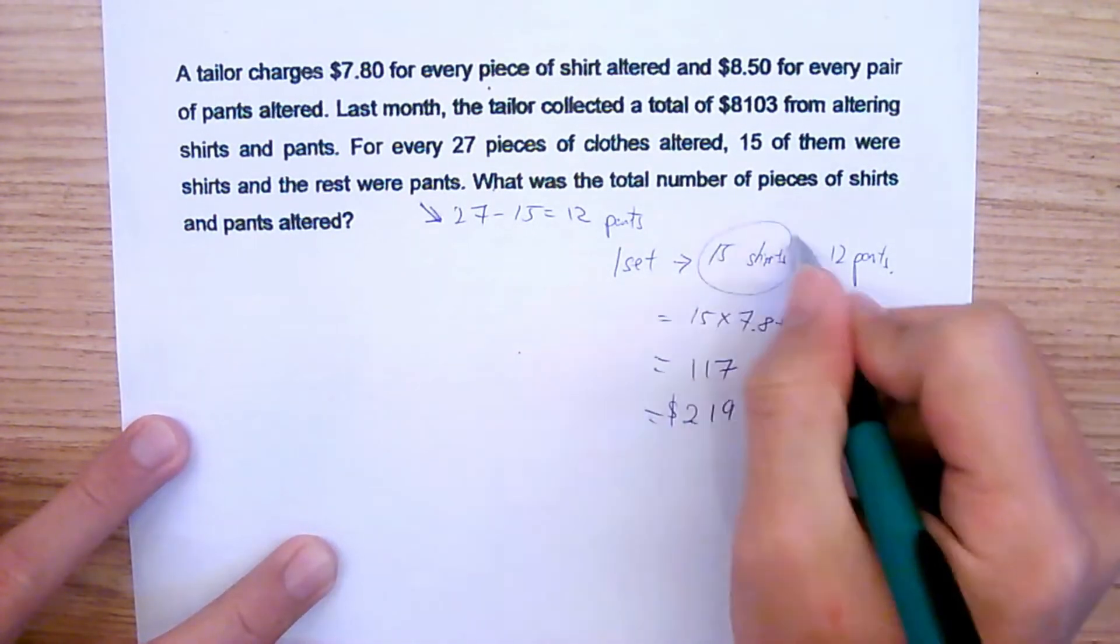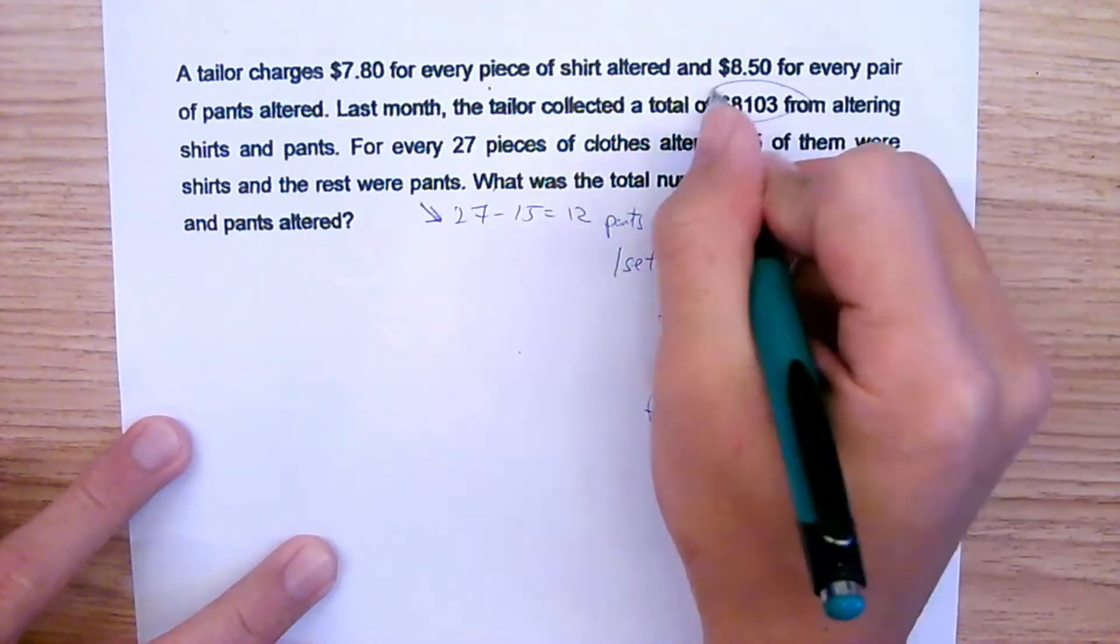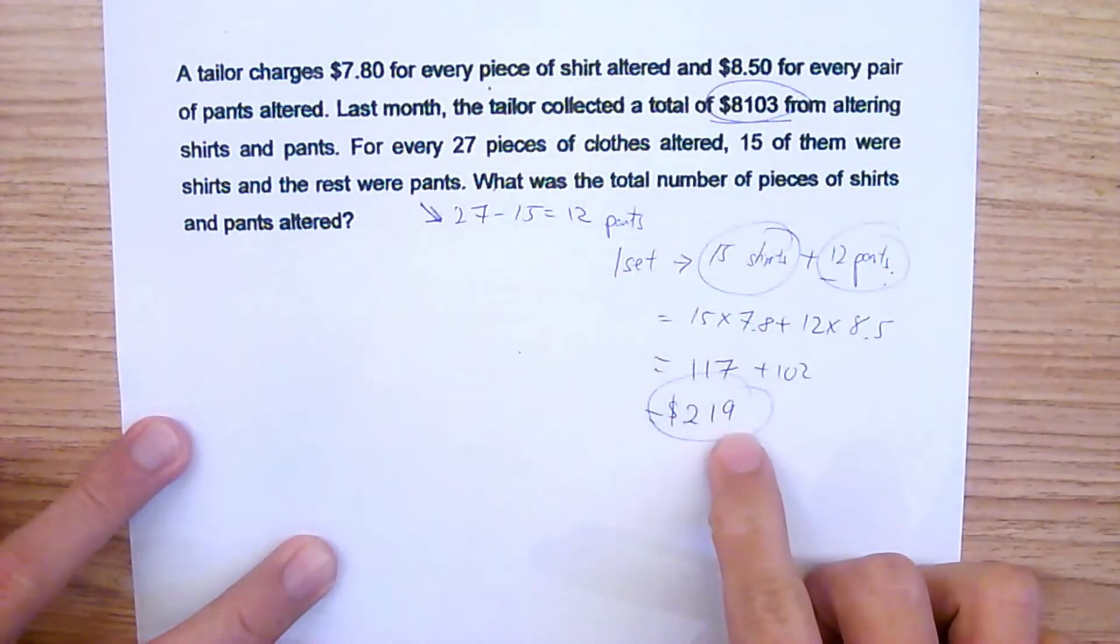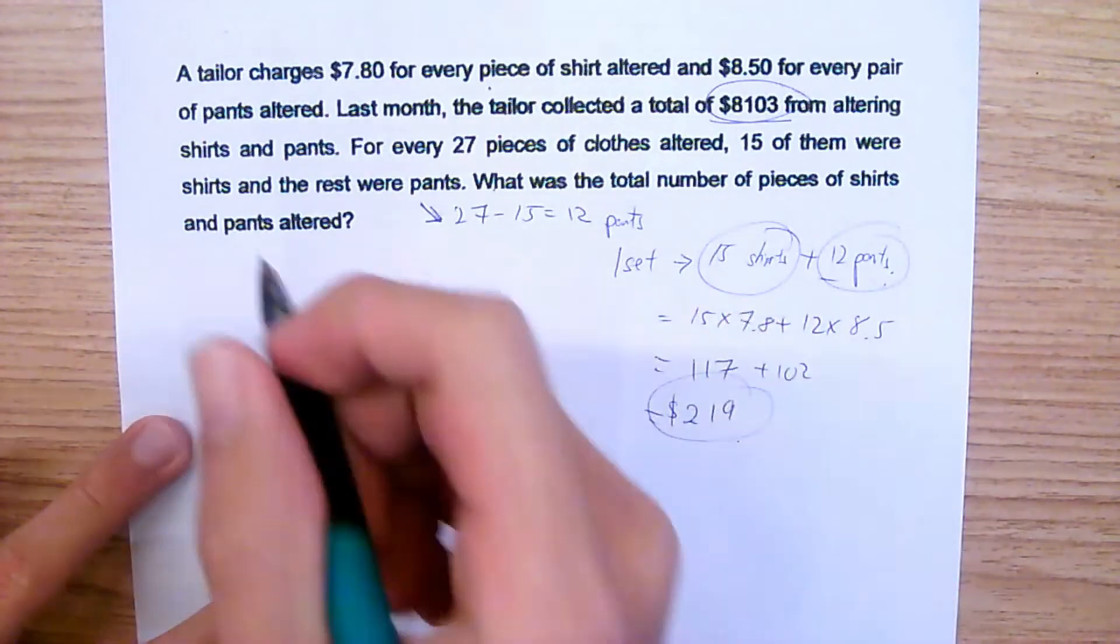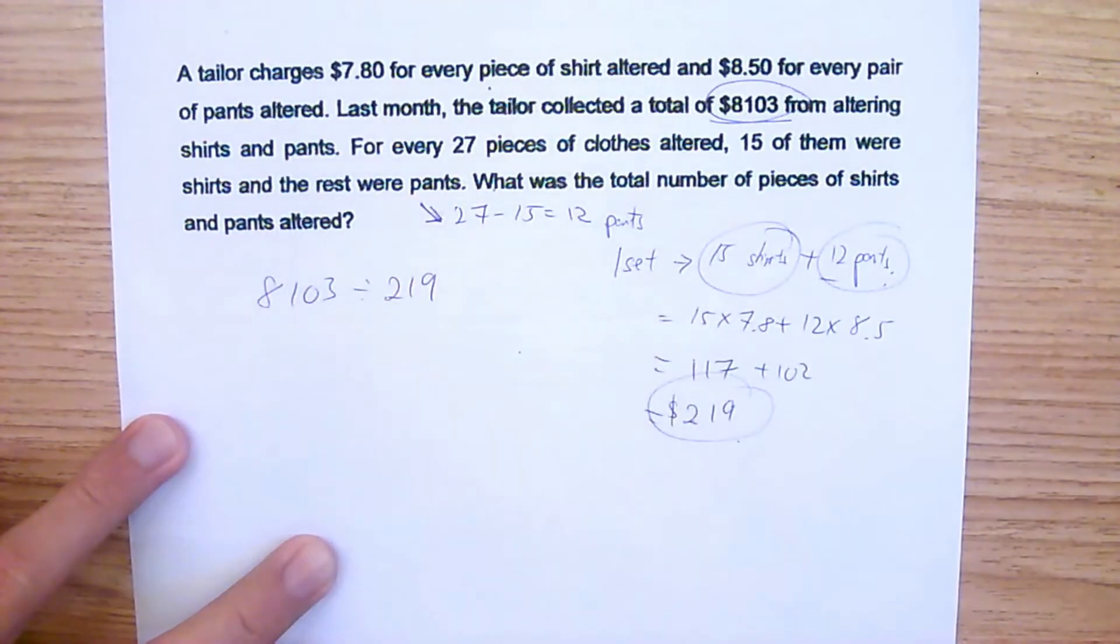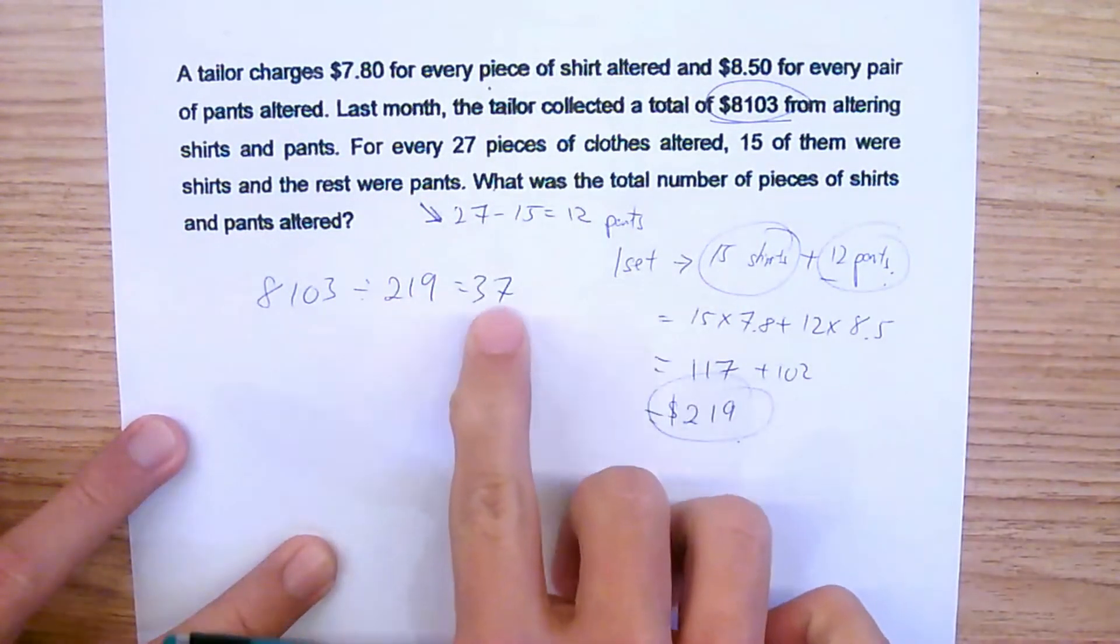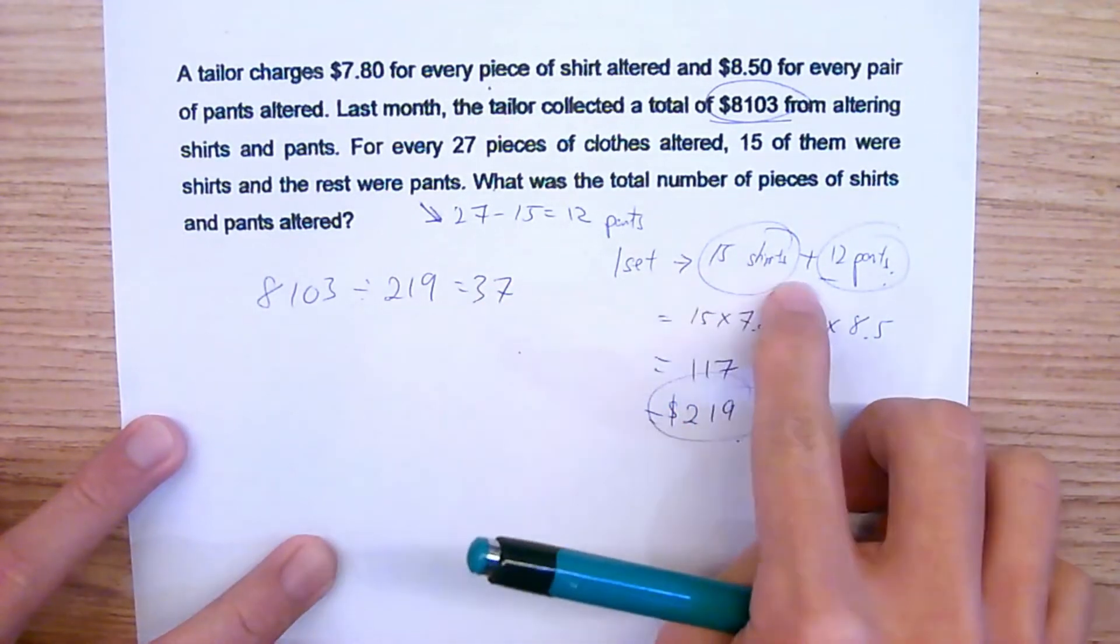So 1 set of 15 shirts and 12 pants will cost this much. In total, he collected this much. So we take this one divided by this one to find out in total how many sets there are altogether. So 8,103 divided by 219—that will give me 37. Which means that in total there are 37 sets of 15 shirts and 12 pants.